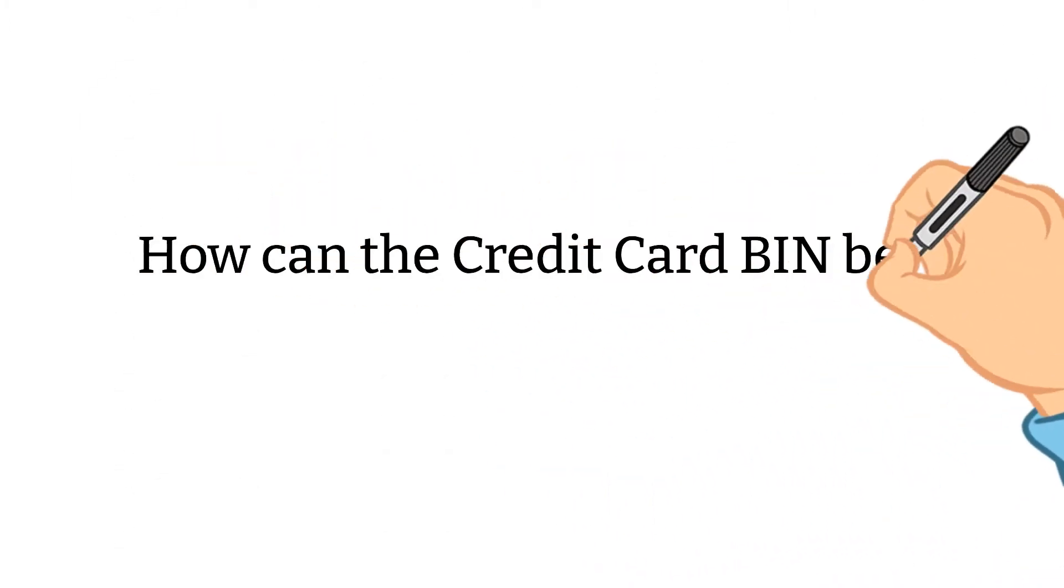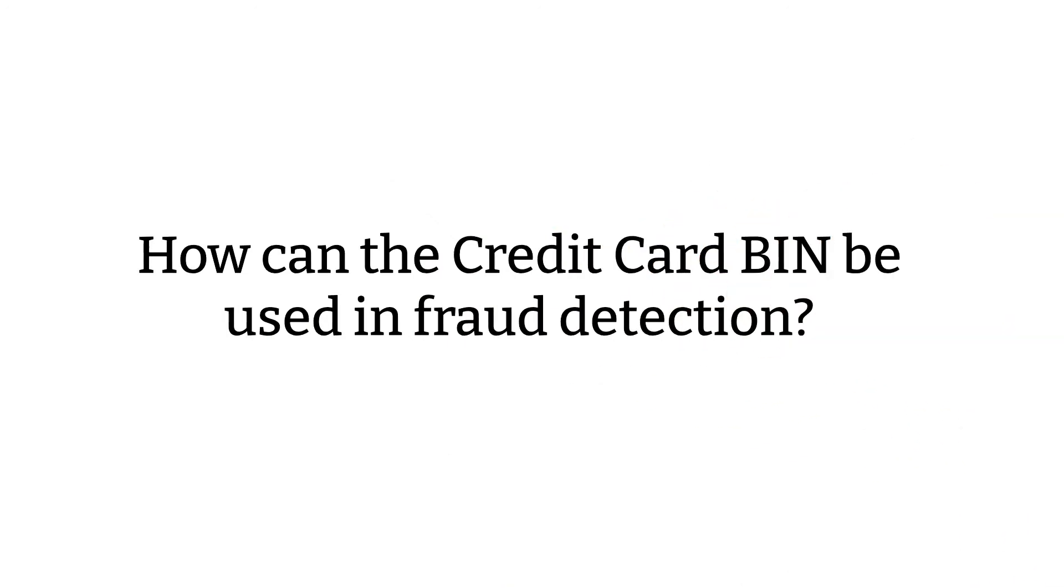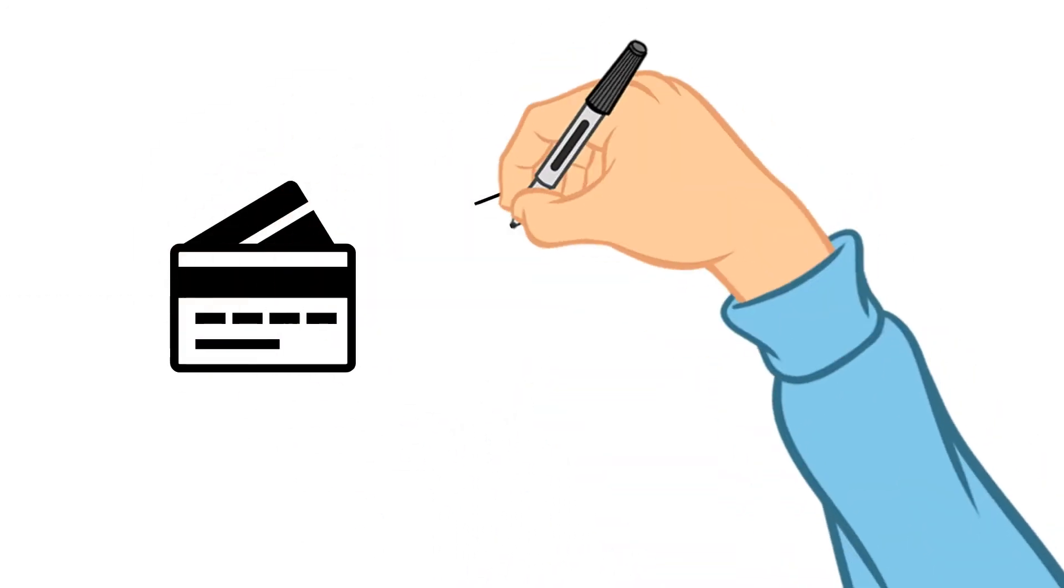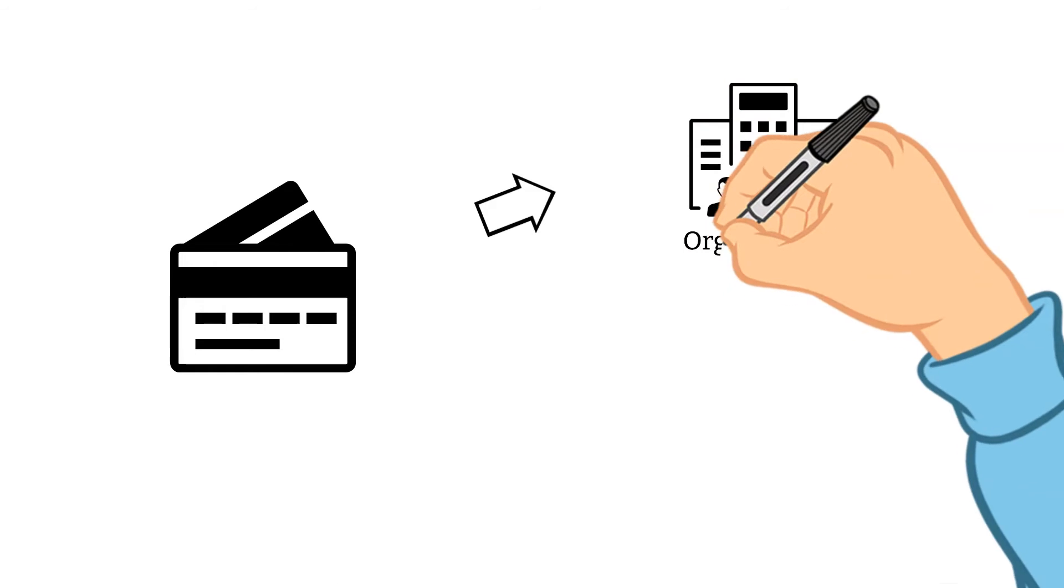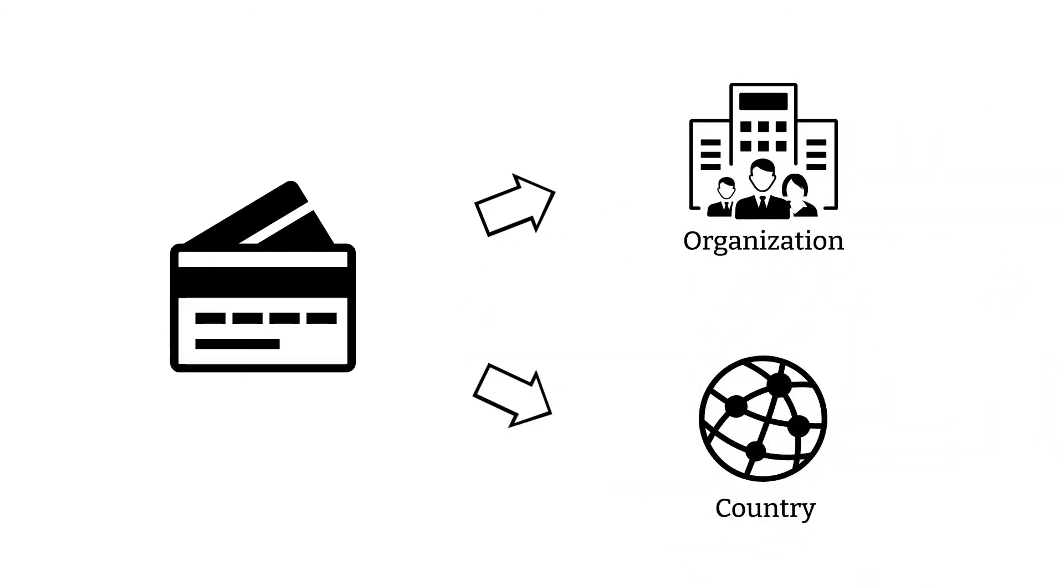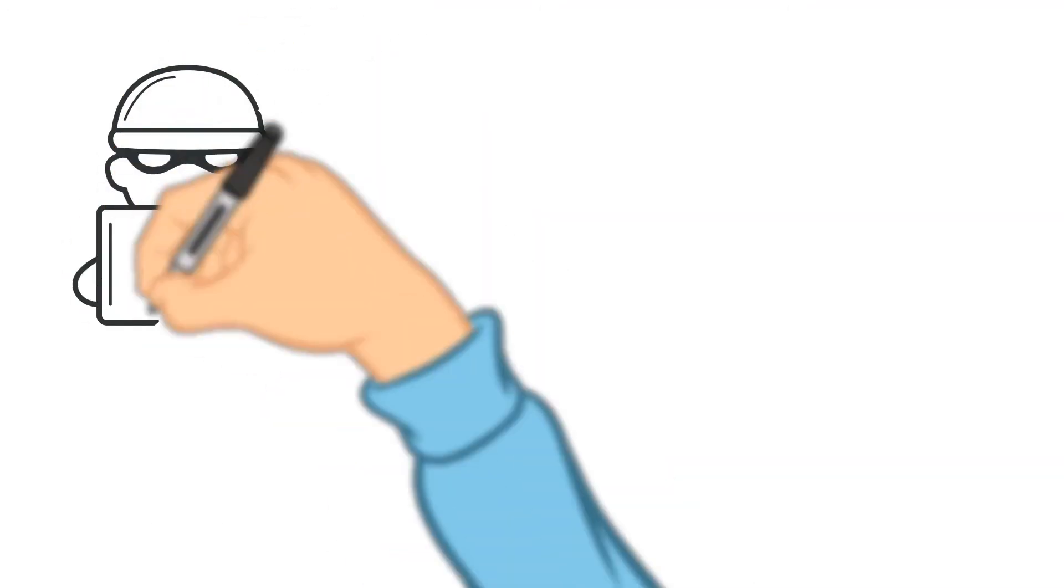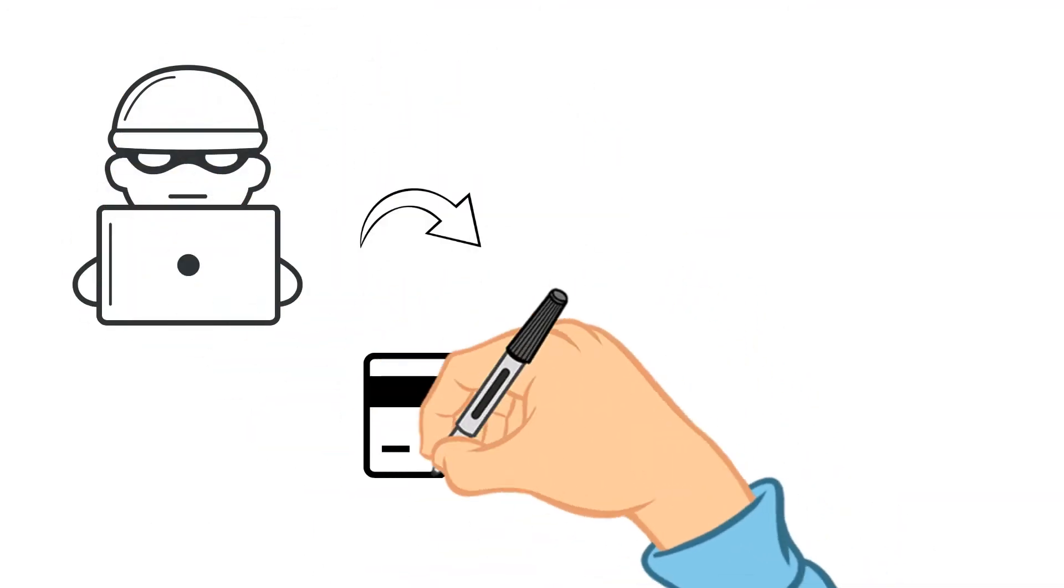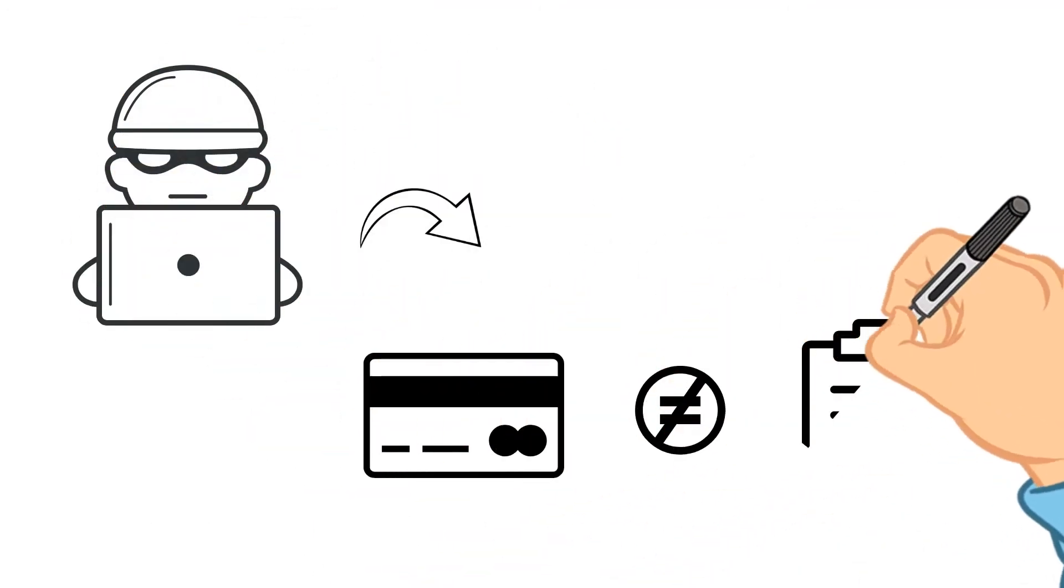How can the credit card BIN be used in fraud detection? With the IIN or BIN, relevant card information like card issuer organization and country can be obtained. It might be a fraud if the BIN country and the country provided in the order details are different.